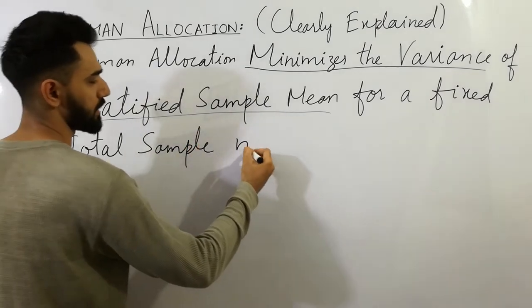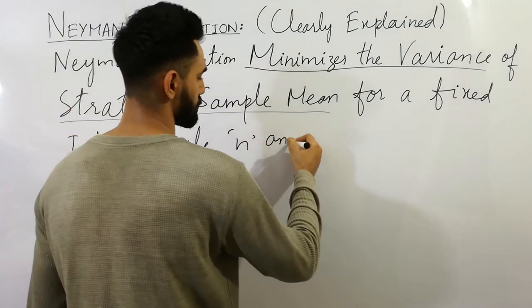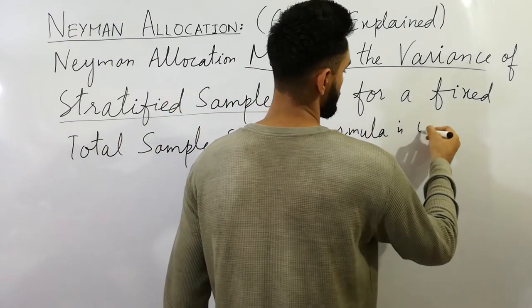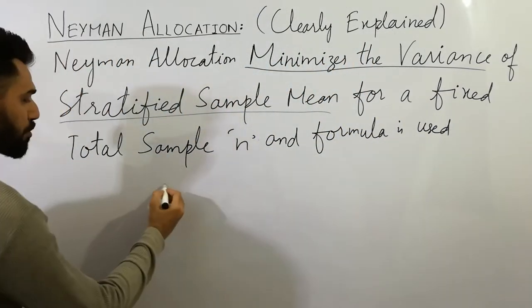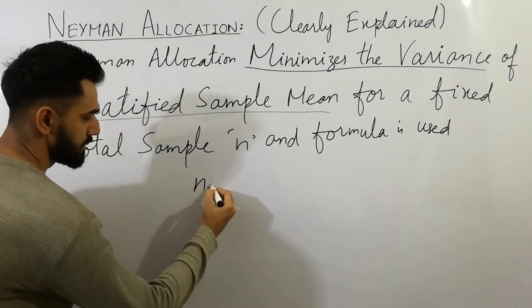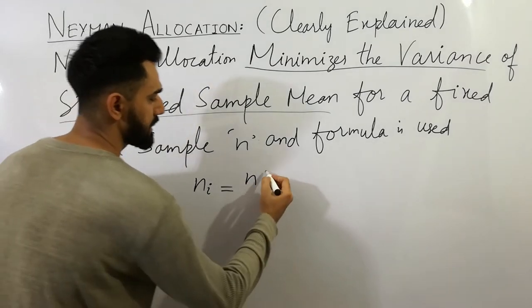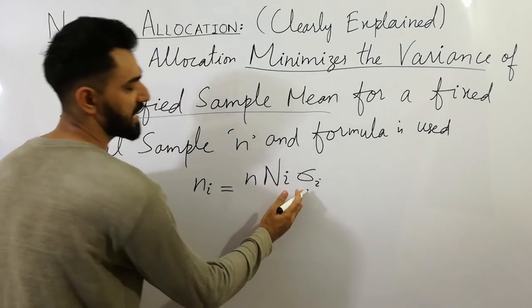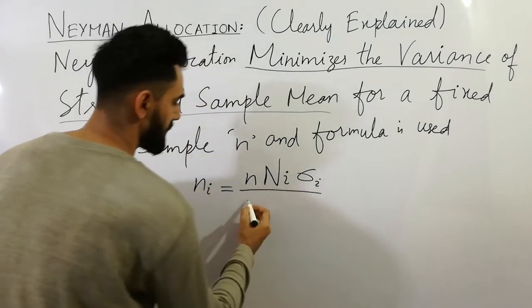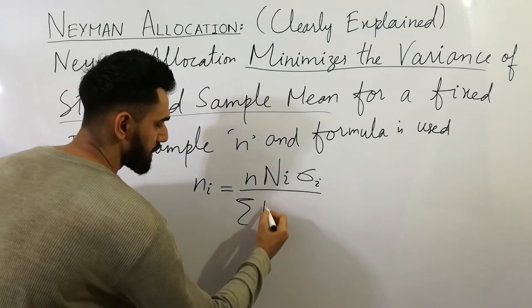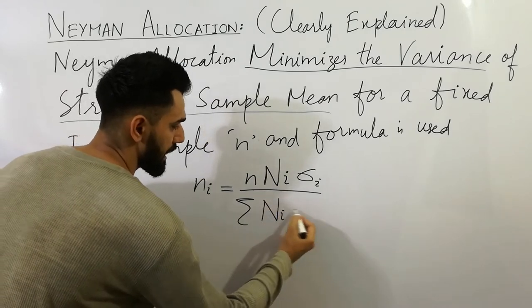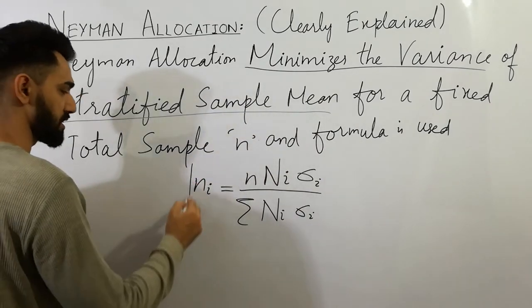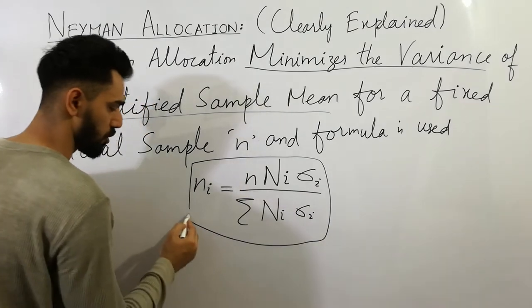The formula used is: small n_iota equals n times capital N_iota times sigma over the summation of capital N_iota times sigma_iota. This formula is similar to our optimum allocation, which I've already discussed in the last lecture.